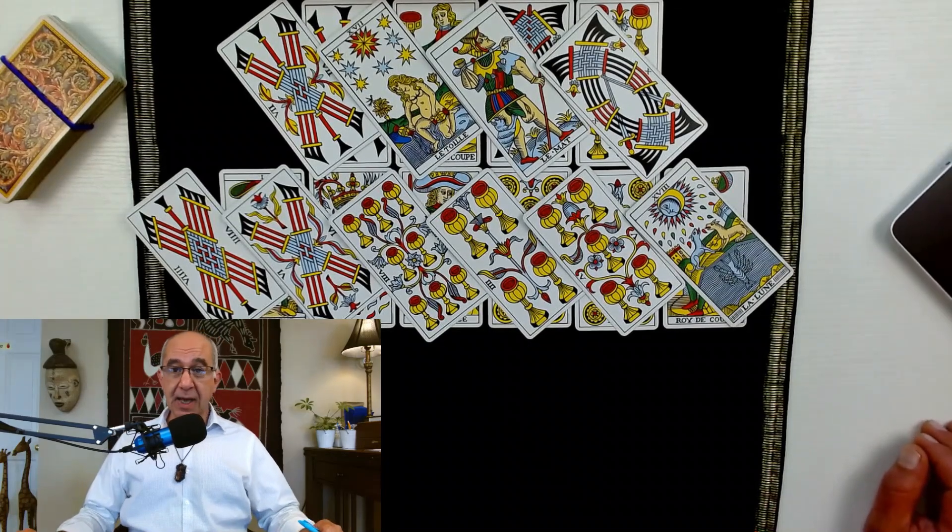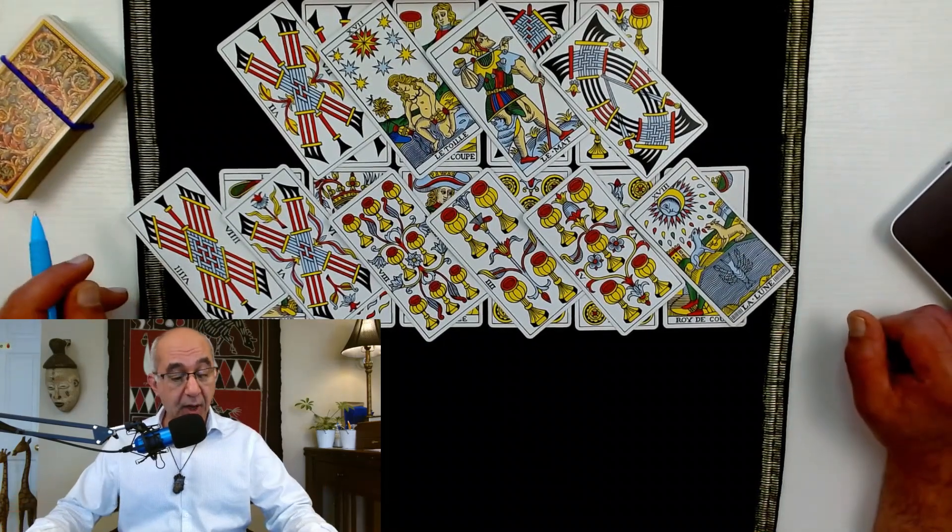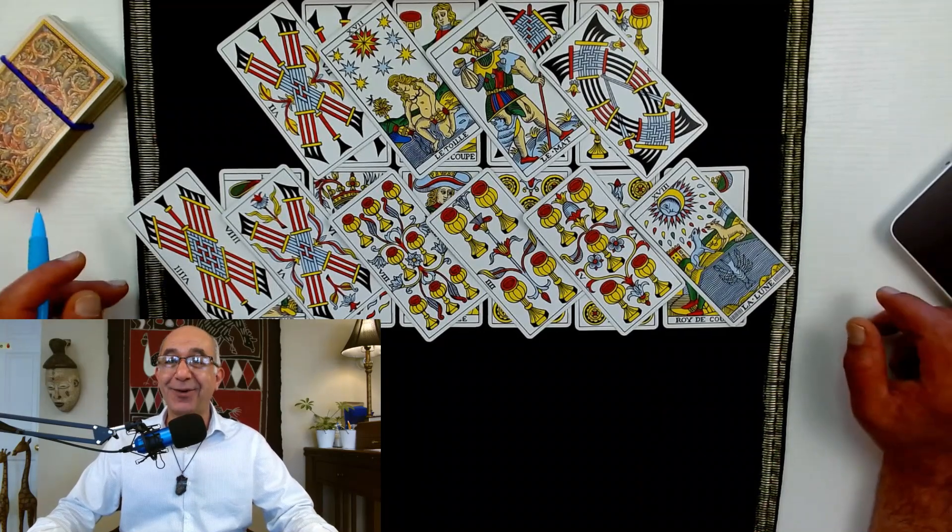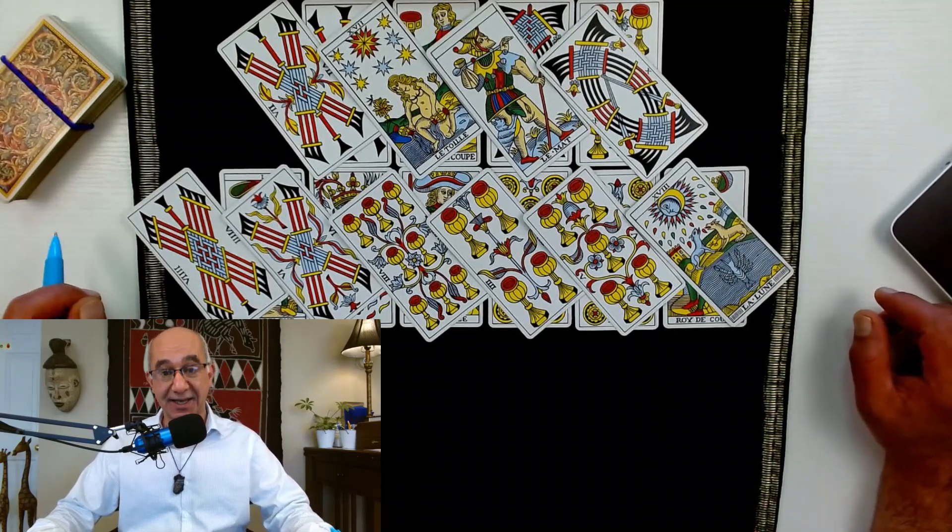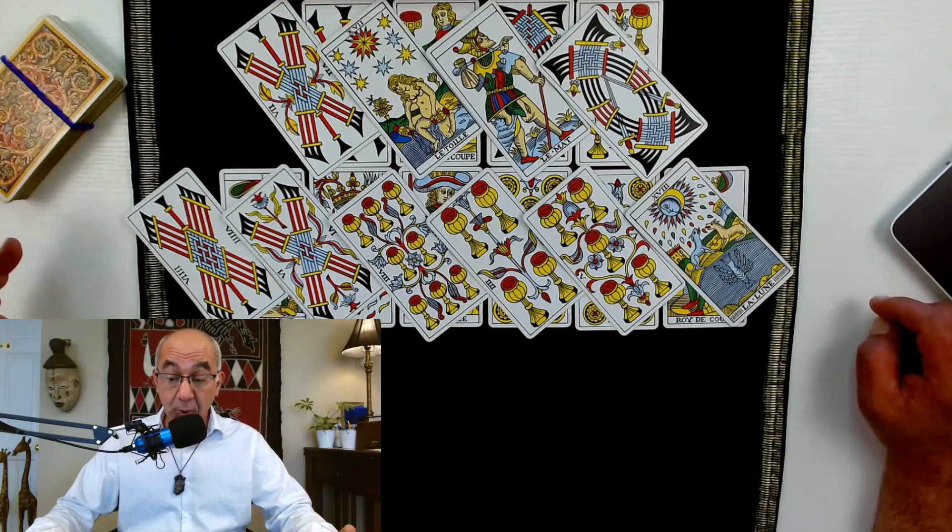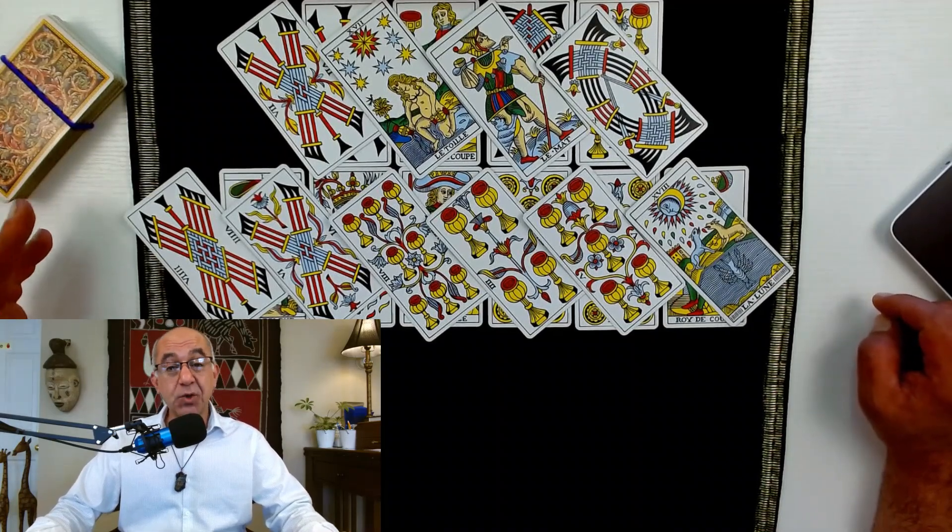There's a financial completion here with that Ten of Swords at the end. That's very powerful to get that towards the end. We look at the Nine of Wands here, the Magician's energy now.